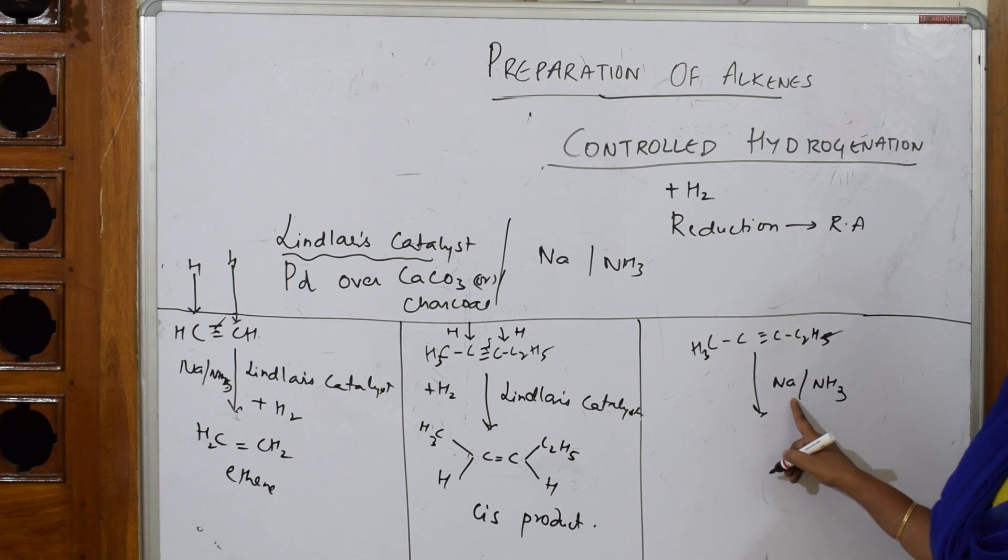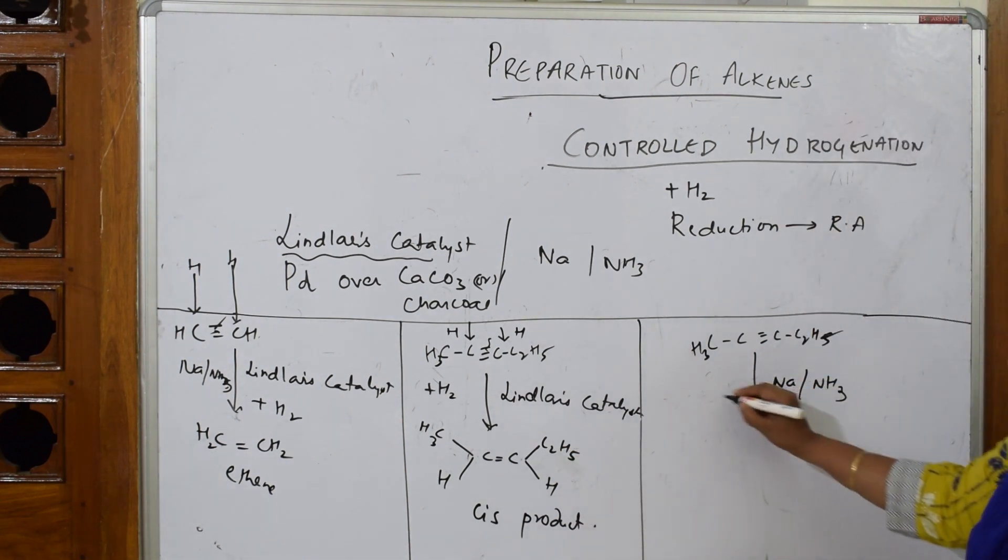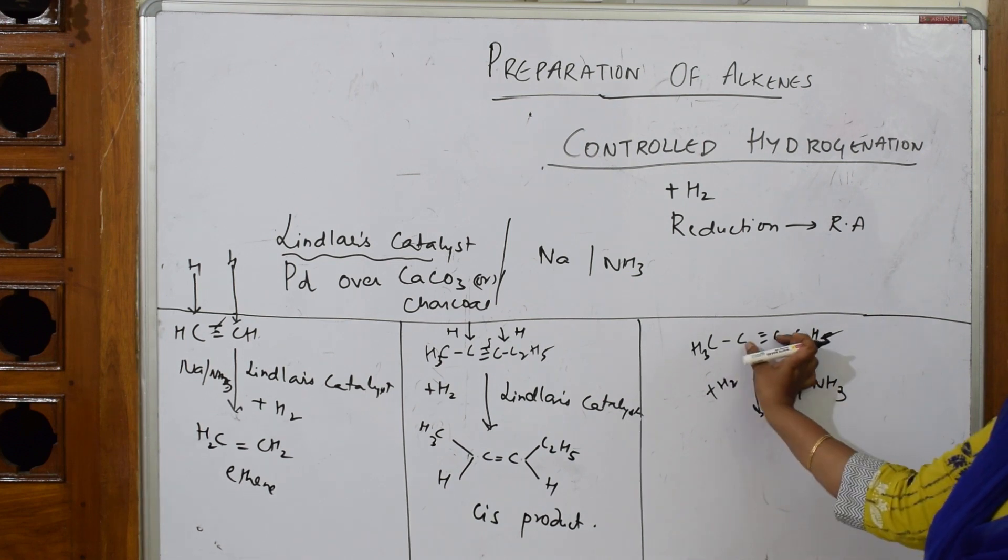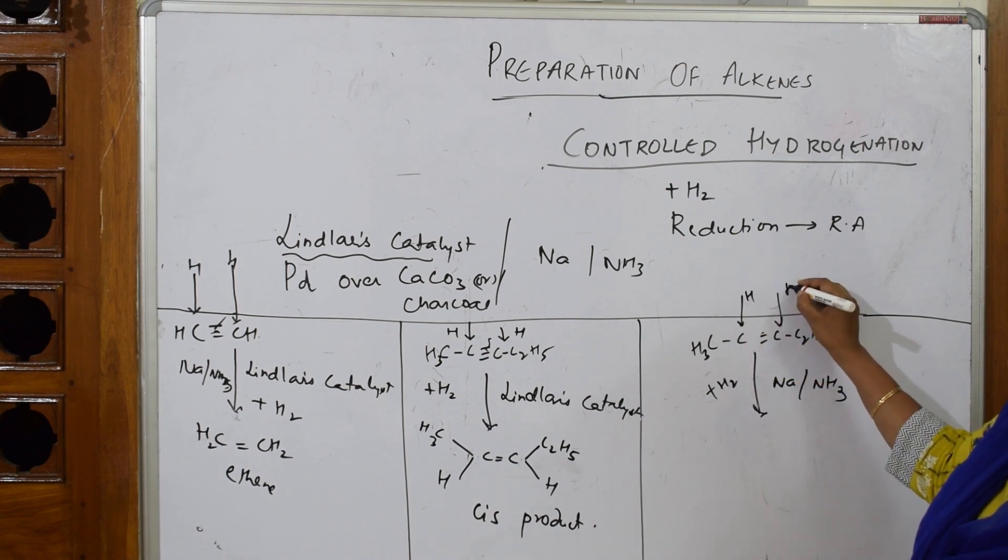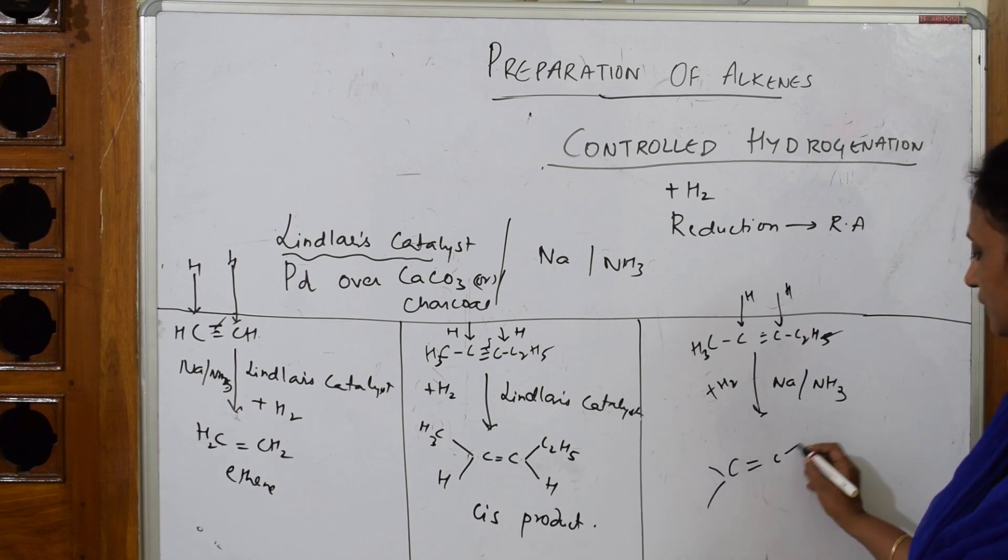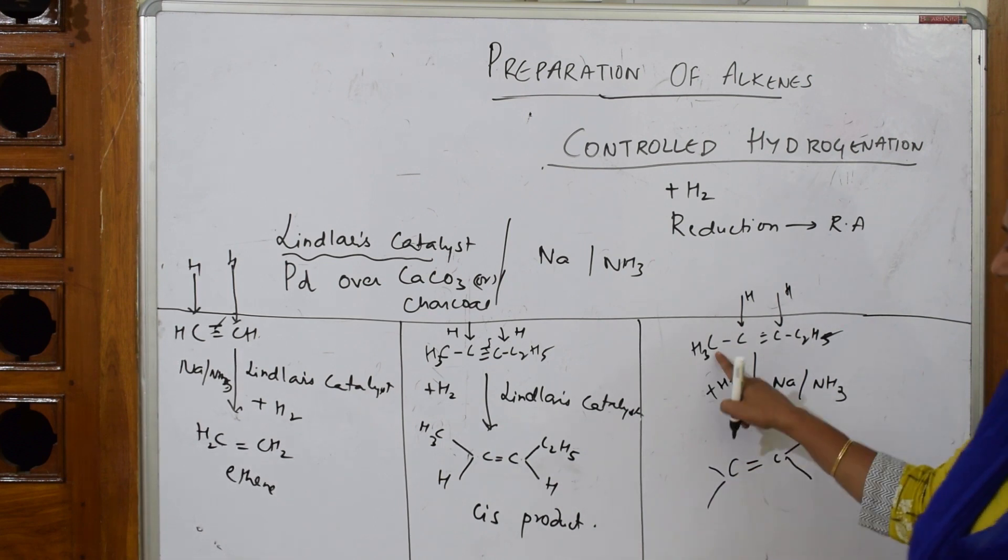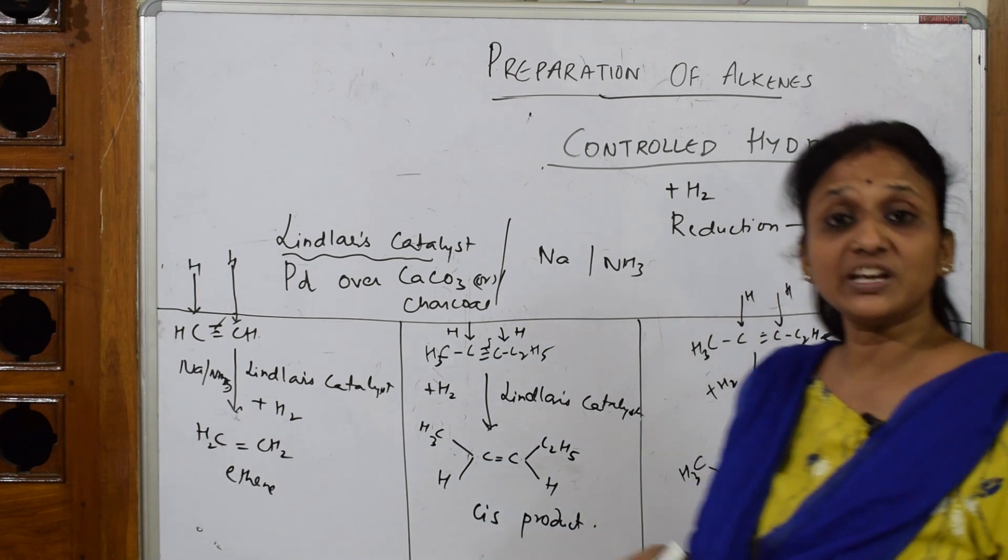Now the same thing if you have Na/NH3. You're controlling the reaction with sodium and ammonia. What will happen? It's going to add hydrogen. It's going to add in between the triple bond. Where it will break this triple bond: one hydrogen adds here and one more hydrogen adds here. Same product: C double bond C. But you have to be careful here.